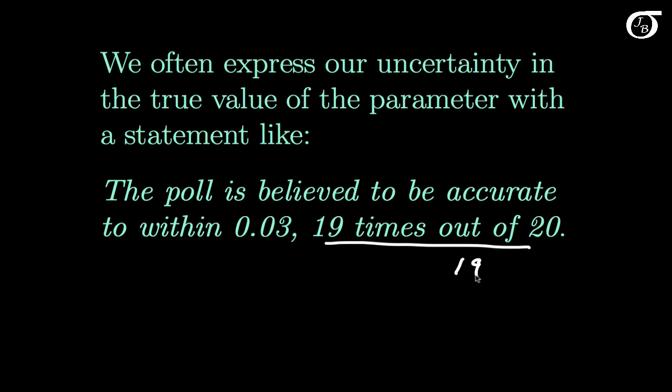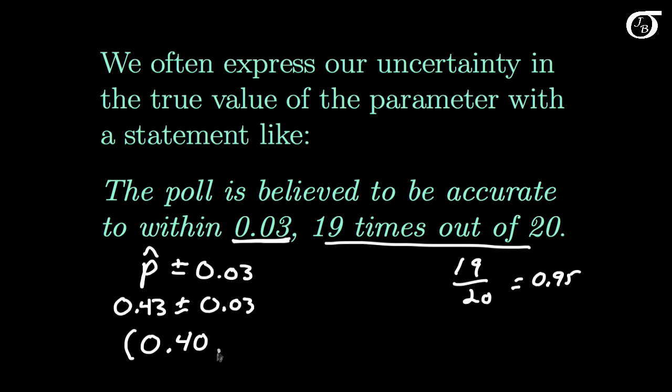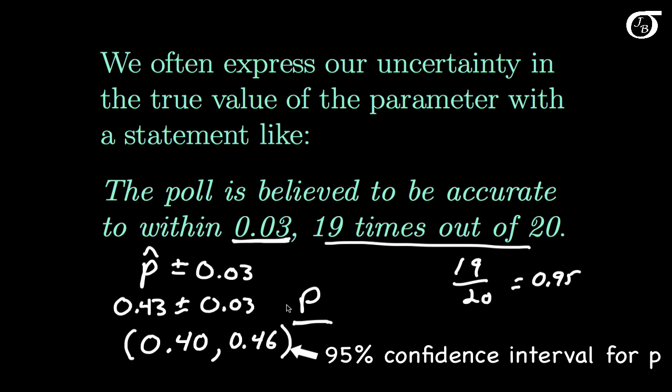First note that 19 out of 20 is simply 0.95 here. And so that's the same as a 95% confidence level. And what we're saying is when we're about to draw a random sample from the population of this size, that we are 95% confident that the sample proportion p-hat is going to lie within 0.03 of the true value of p. This 0.03 is sometimes called the margin of error. And so p-hat plus and minus 0.03 is going to be a 95% confidence interval for p. And in our case that's going to be 0.43 plus and minus 0.03, or in other words, if we carry out the addition and subtraction, 0.40 to 0.46. And this is a 95% confidence interval for the parameter p. And we can be 95% confident that the true value of the parameter p lies somewhere in this interval.